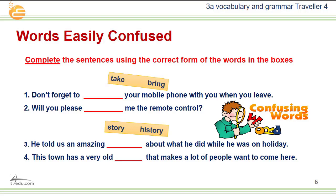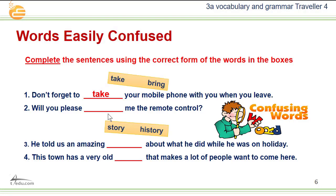Now we will look at words easily confused. Complete the sentences using the correct form of the words in the boxes: take and bring. Number one: Don't forget to take your mobile phone with you when you leave. Number two: Will you please bring me the remote control?